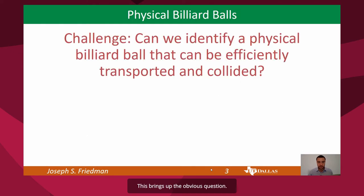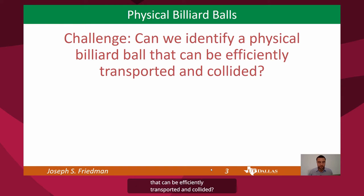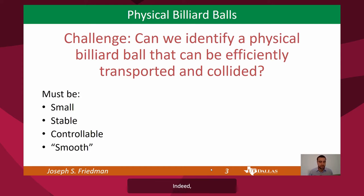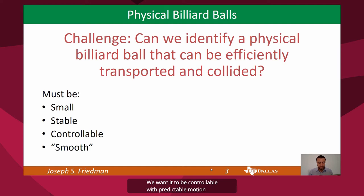This brings up the obvious question: for a real reversible computer, can we identify a physical billiard ball that can be efficiently transported and collided? To maximize the efficiency, we'll want a billiard ball that is very small — ideally nanoscale. We want it to be stable at room temperature, or the operating temperature of the computer. We want it to be controllable, with predictable motion, and smooth, such that it moves and collides with minimal friction.